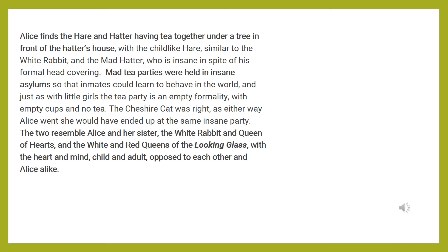Unlike Alice, the rabbit is wide awake. Alice finds the Hare and Hatter having tea together under a tree in front of the Hatter's house — the childlike Hare, similar to the White Rabbit, and the Mad Hatter, who is insane in spite of his formal head covering. Mad tea parties were held in insane asylums so that inmates could learn to behave in the world, and just as with little girls, the tea party is an empty formality with empty cups and no tea. The Cheshire Cat was right: as either way Alice went, she would have ended up at the same insane party.